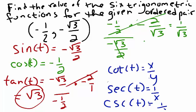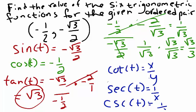So cotangent of t equals 1 over square root of 3. Now we'll rationalize our denominator. We'll multiply both numerator and denominator by square root of 3 over square root of 3, which gives us square root of 3 over 3 for cotangent of t.